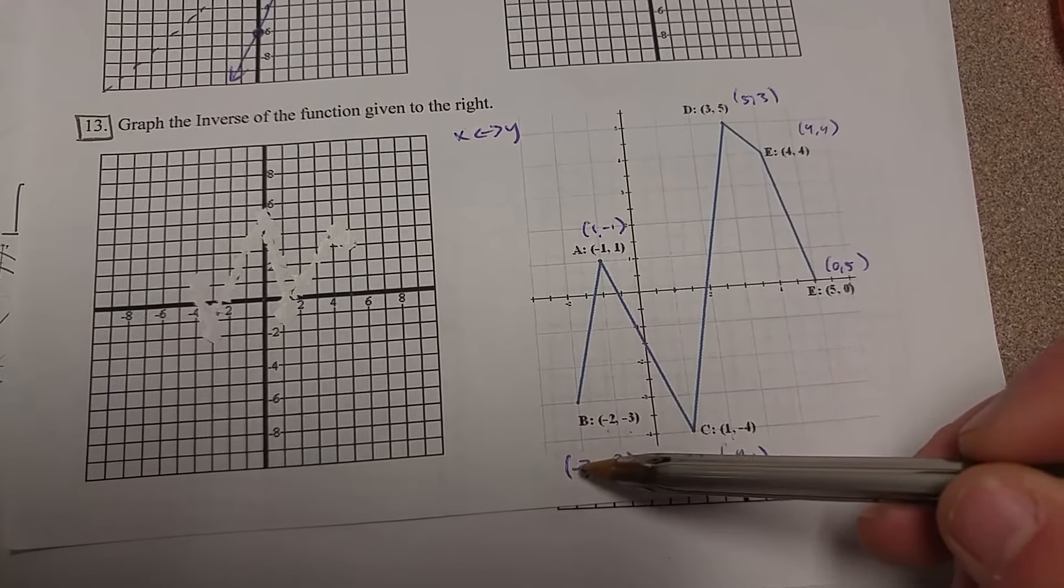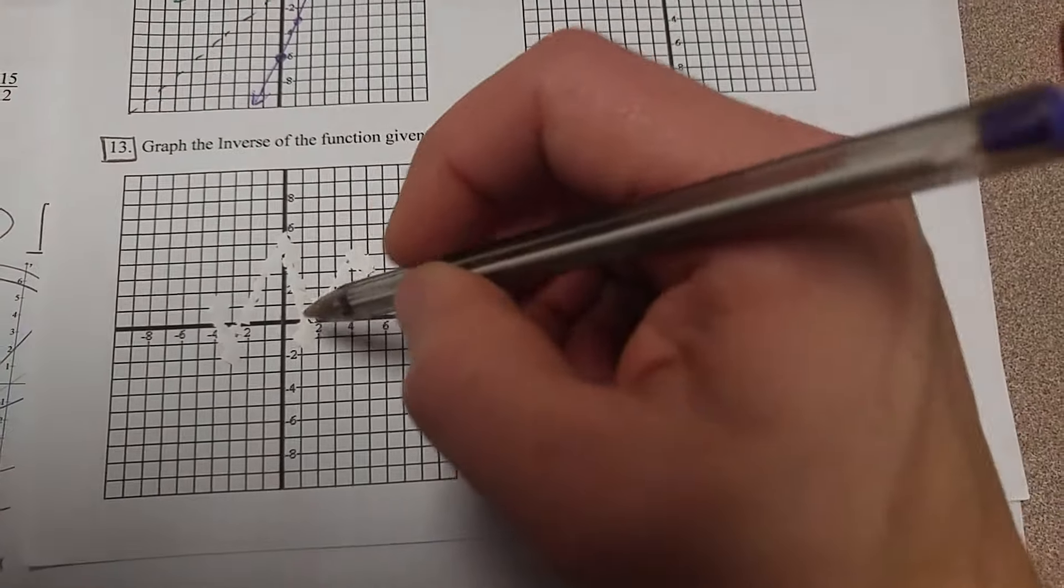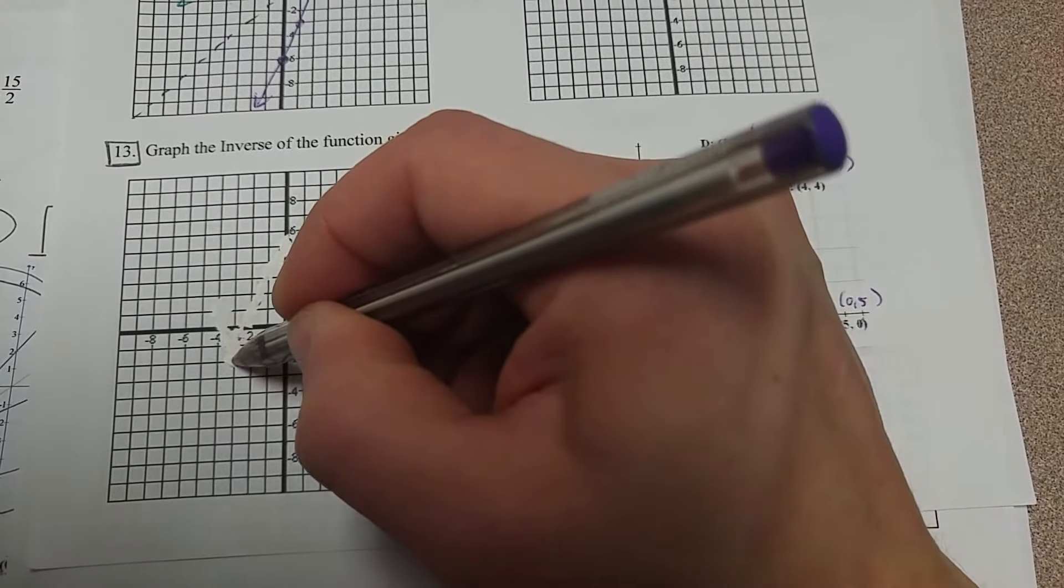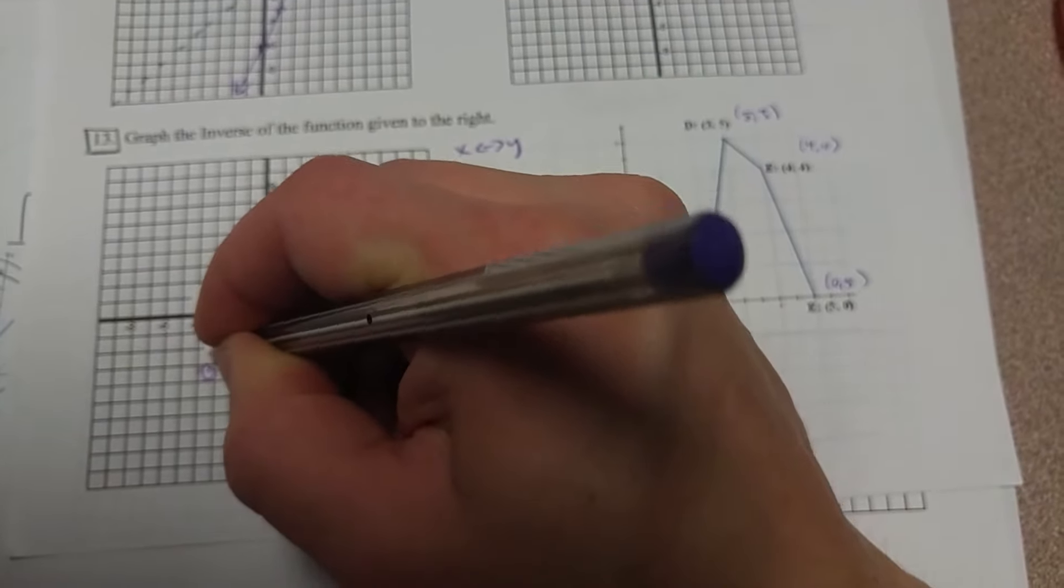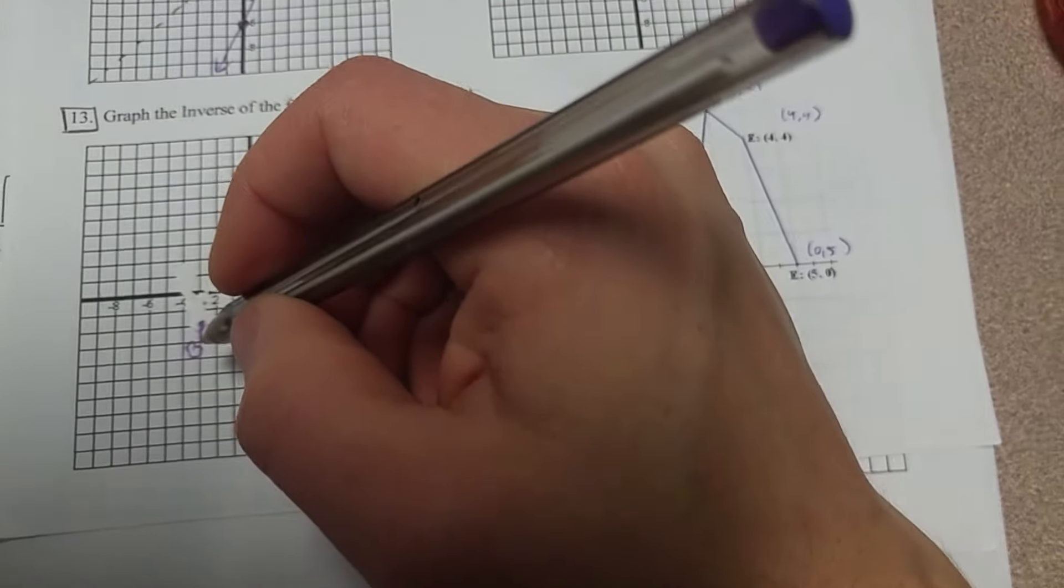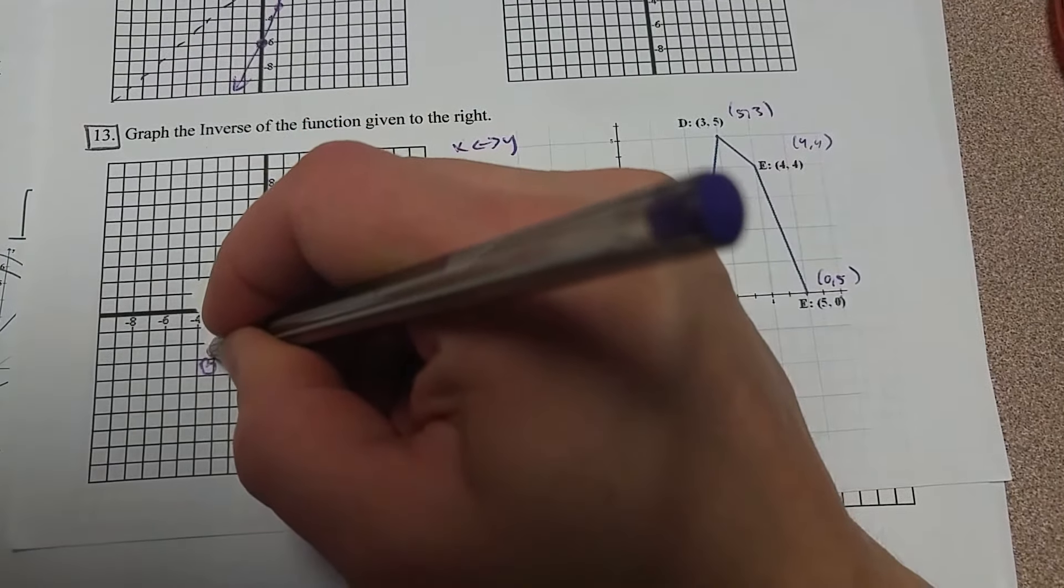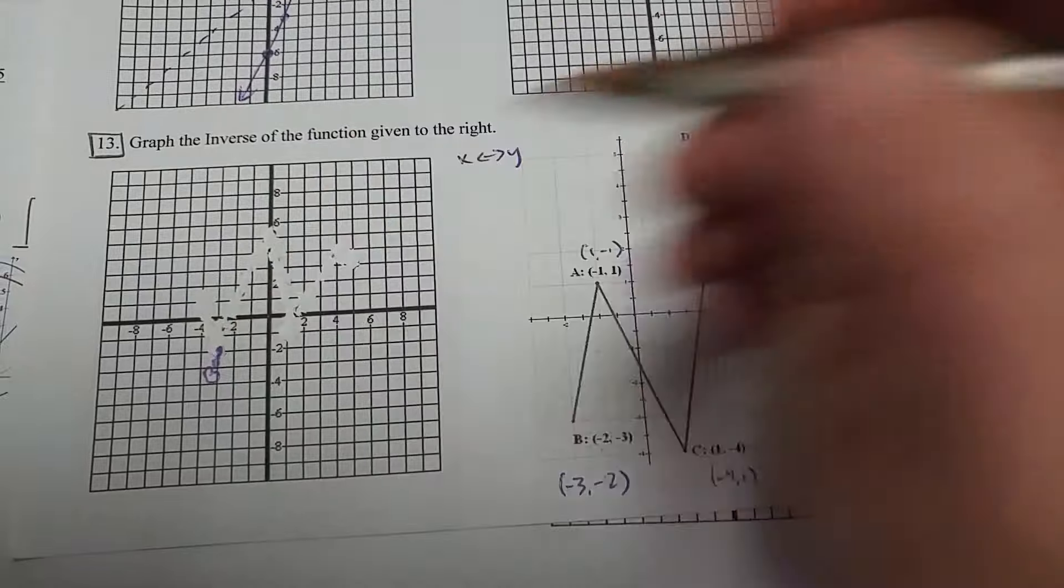So the inverse of B is going to be negative 3, negative 2. So negative 3, negative 2, it's right here. So this one, we're going to call this B with that little same inverse mark that you normally see, like f inverse of x, so we're going to call that B prime.